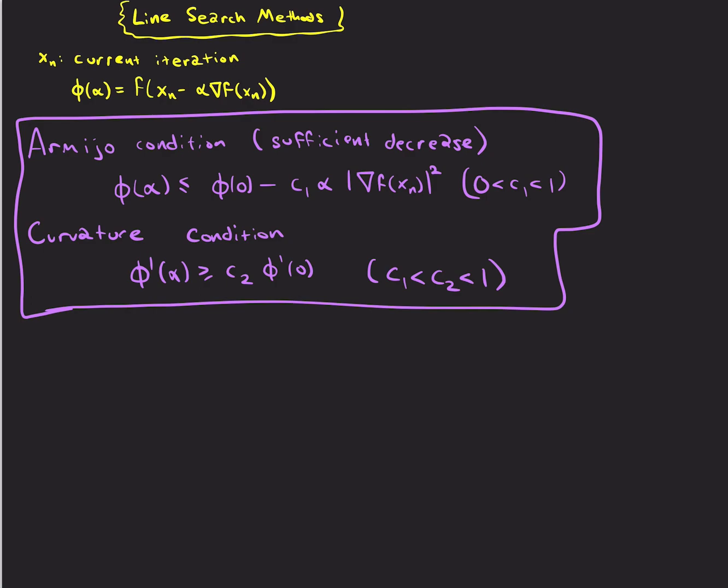Just as a quick review, if we consider x_n to be our current iteration, line search methods are concerned with this function φ(α), which is a scalar function. We've already chosen our descent direction as the gradient direction. In general, this could be p_n, but for gradient descent, we're choosing that direction as the negative gradient.